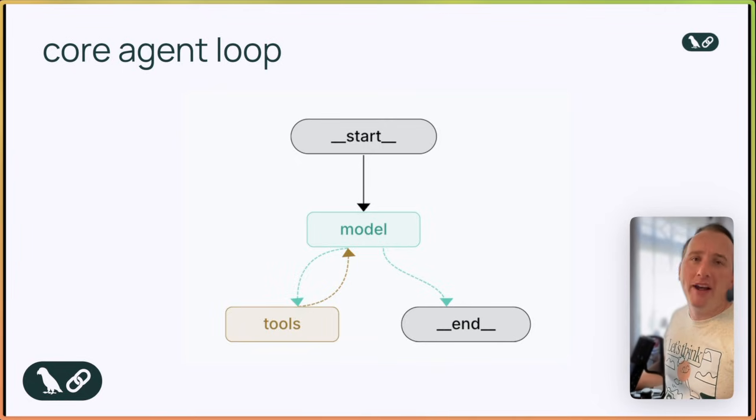Before we dive into the code, let's recap how agents actually work. An agent runs in a continuous reasoning loop. It starts with an input, something like a user message or prompt, and then cycles through four main steps.